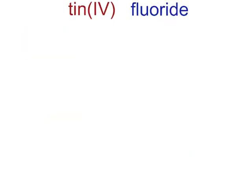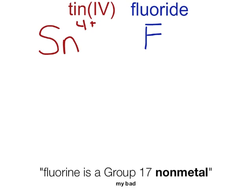Tin(IV) fluoride. Tin has the symbol Sn. Tin has multiple oxidation states. This one is 4 positive. Fluoride, well, fluorine is a group 17 metal with 7 valence electrons.